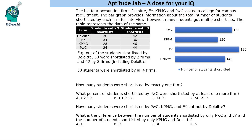Welcome to Aptitude Jab. This is a set based on a four-set Venn diagram. The Big Four accounting firms — Deloitte, EY, KPMG, and PWC — visited a college for campus recruitment. The bar graph shows the total number of students shortlisted by each firm for their interview. Apart from that, a table is given showing that many students got multiple shortlists.